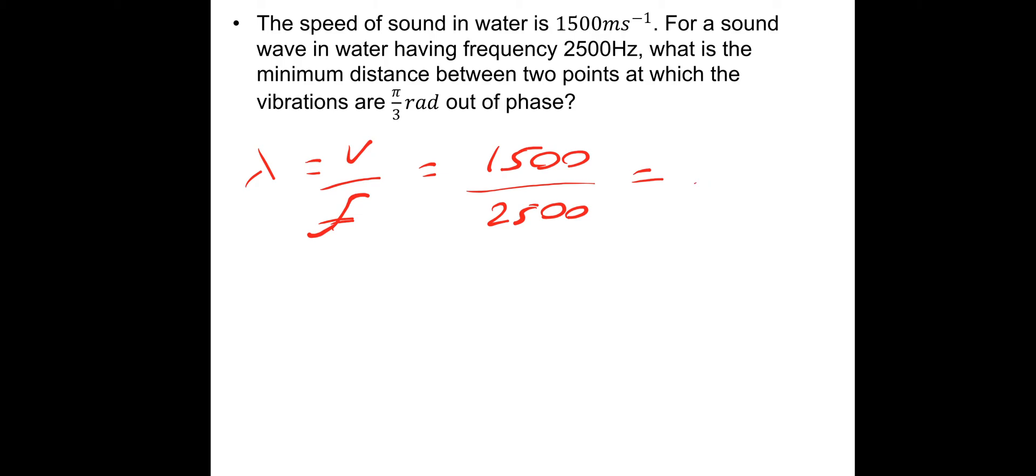The amount of wave that we're looking at is π/3. A full wave is 2π radians. What we can do is divide that by π/3, which gives us 6, 6 times. So if we do 0.6 meters divided by 6, that gives us a minimum distance of 0.1 meters.